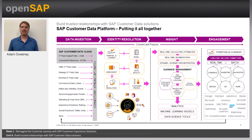Engagement is the actionable part of the SAP Customer Data Platform. Using destination applications and actions, configure SAP CDP to push insights into external systems that will take an action based on that result, such as engaging with the customer with a marketing campaign in Emarsys, or sending an SMS welcoming the customer to a higher loyalty level, among many other possibilities.